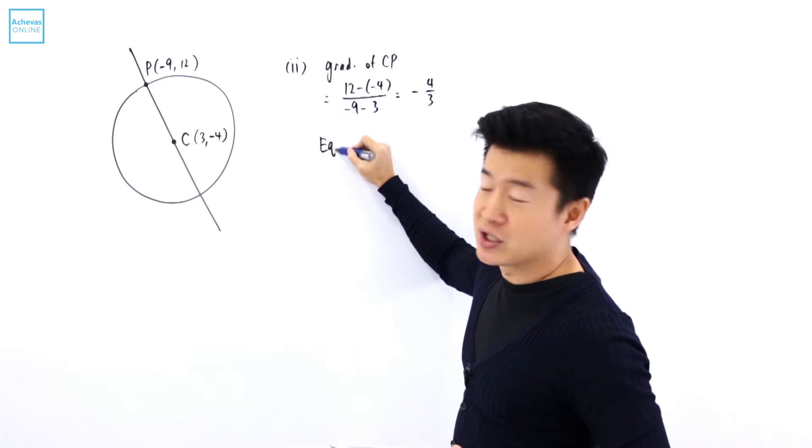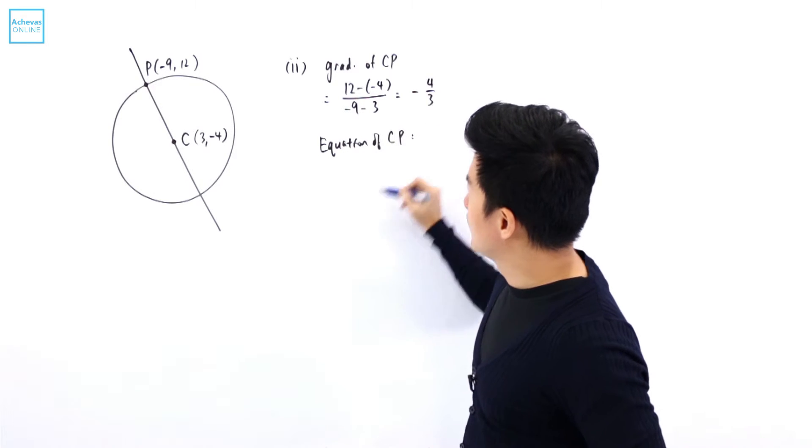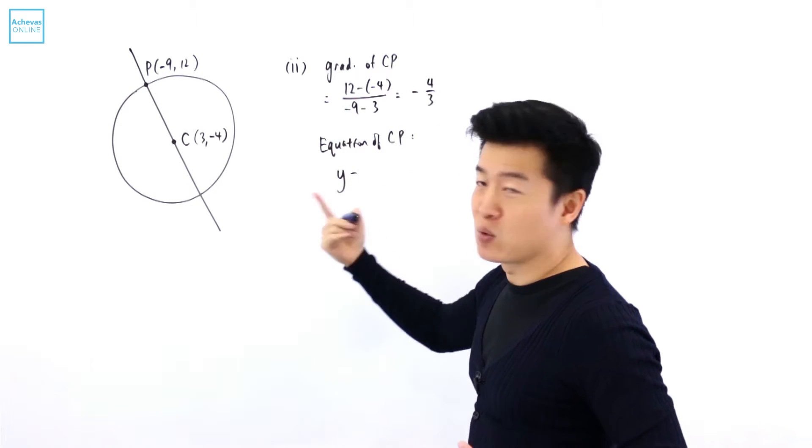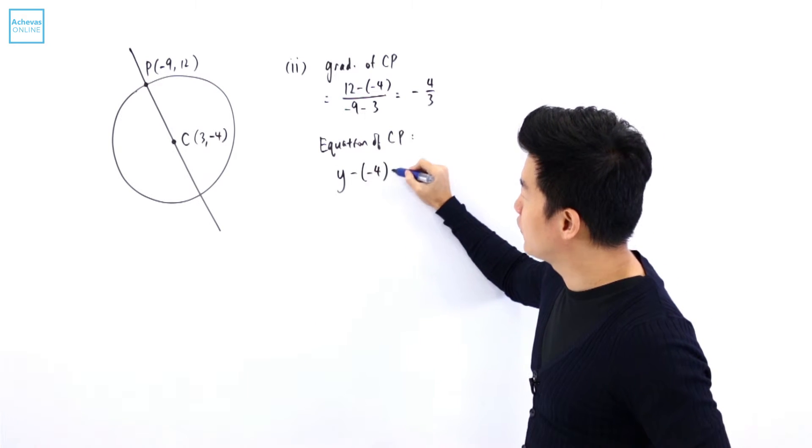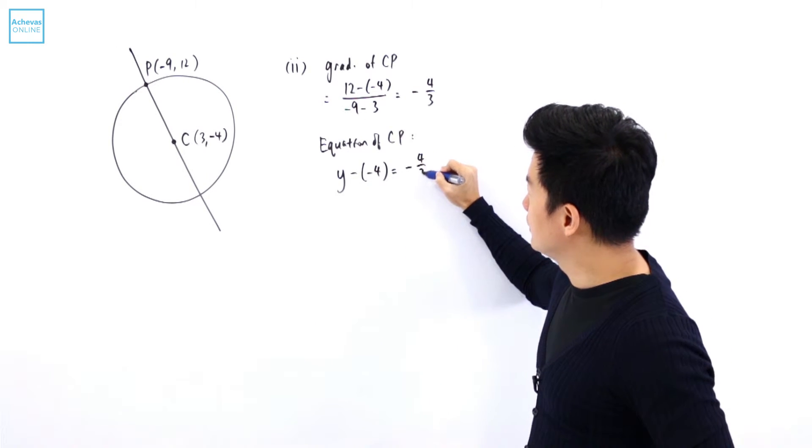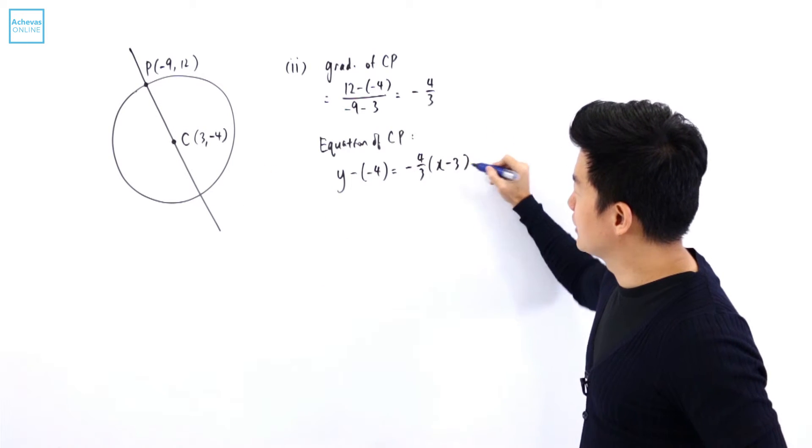So the equation of this line CP will be Y minus a Y coordinate of a point. I'm going to take C at that point. So Y minus minus 4 is equal to the gradient times X minus the X coordinate of that same point, so minus 3.